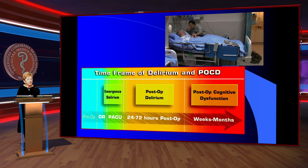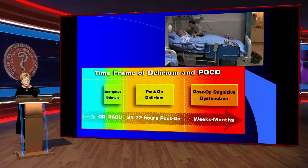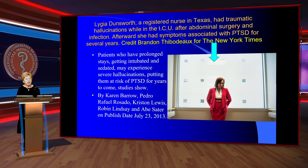Regarding the time frame of delirium and POCD: emergence delirium occurs immediately post-operative; post-operative delirium occurs within 24–72 hours; and post-operative cognitive dysfunction develops over weeks to months. One example involves a patient after abdominal surgery who, connected with infection, had traumatic hallucinations while in the ICU.